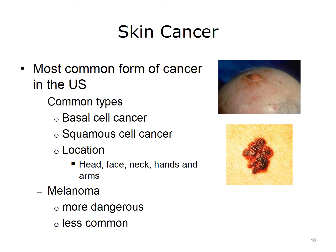The next integumentary system condition is skin cancer, the most common form of cancer in the United States. Each year, about one million people in the U.S. find out they have skin cancer. Skin cancer is 100% curable if found early and treated right away. The two most common types are basal cell cancer and squamous cell cancer. These are slow-growing cancers that seldom spread to other parts of the body, and are usually found on the head, face, neck, hands, and arms.